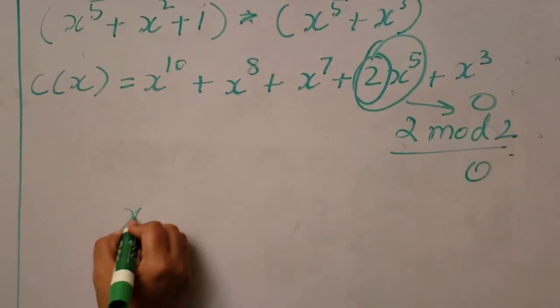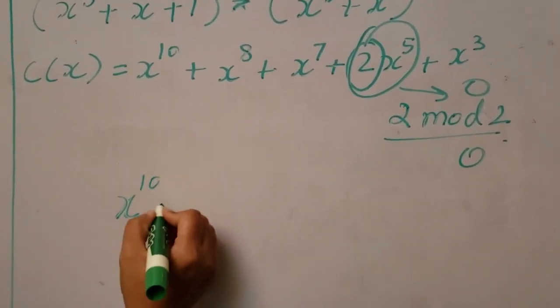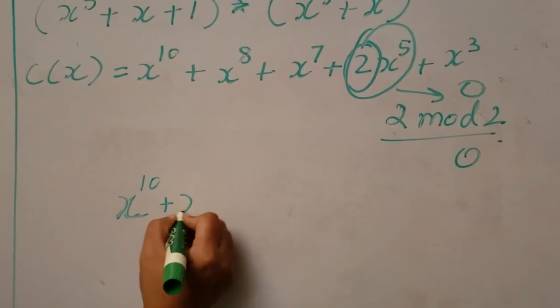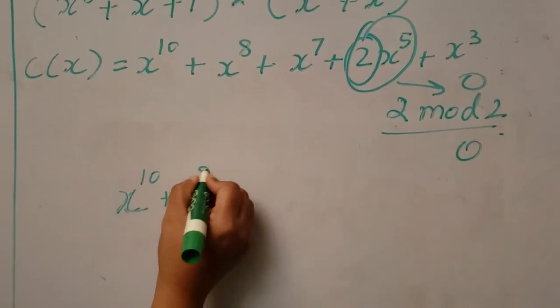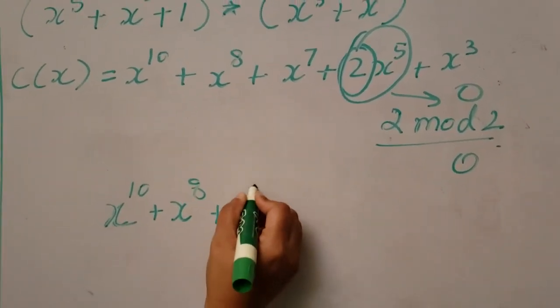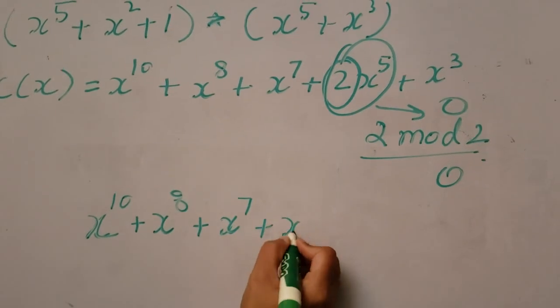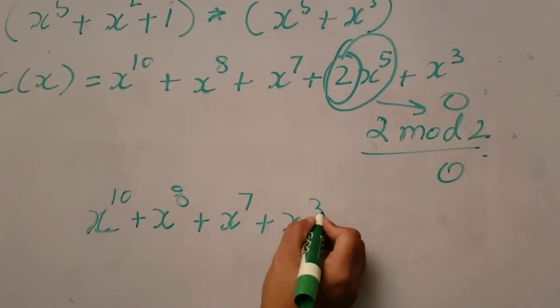So now the polynomial is x to the power 10 plus x to the power 8 plus x to the power 7 plus x to the power 3.